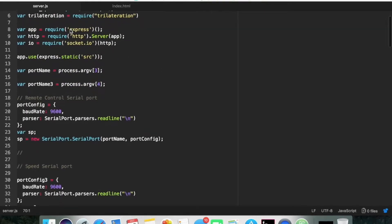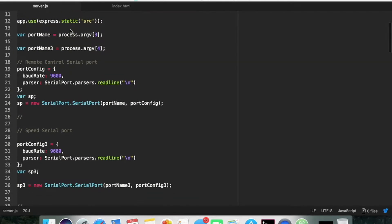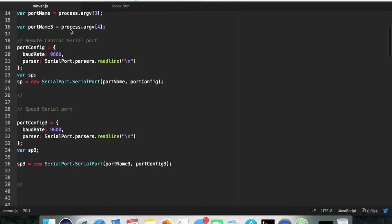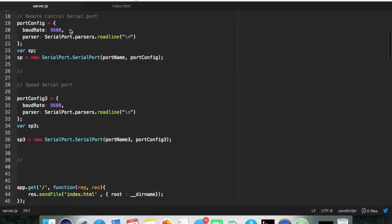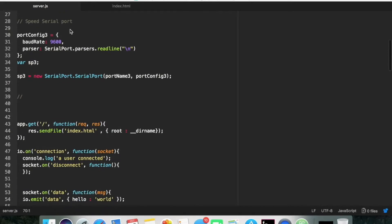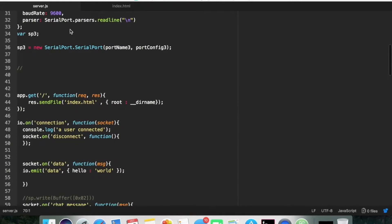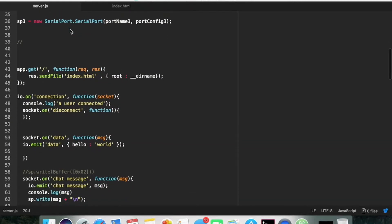So this is the server. The server has two main components. It has the serial port declaration and socket.io. There are many serial ports because you have many Arduinos connected to the Raspberry Pi at the same time. But in this case, for the remote control, we only care about the first port, which is port one with a baud rate of 9600.